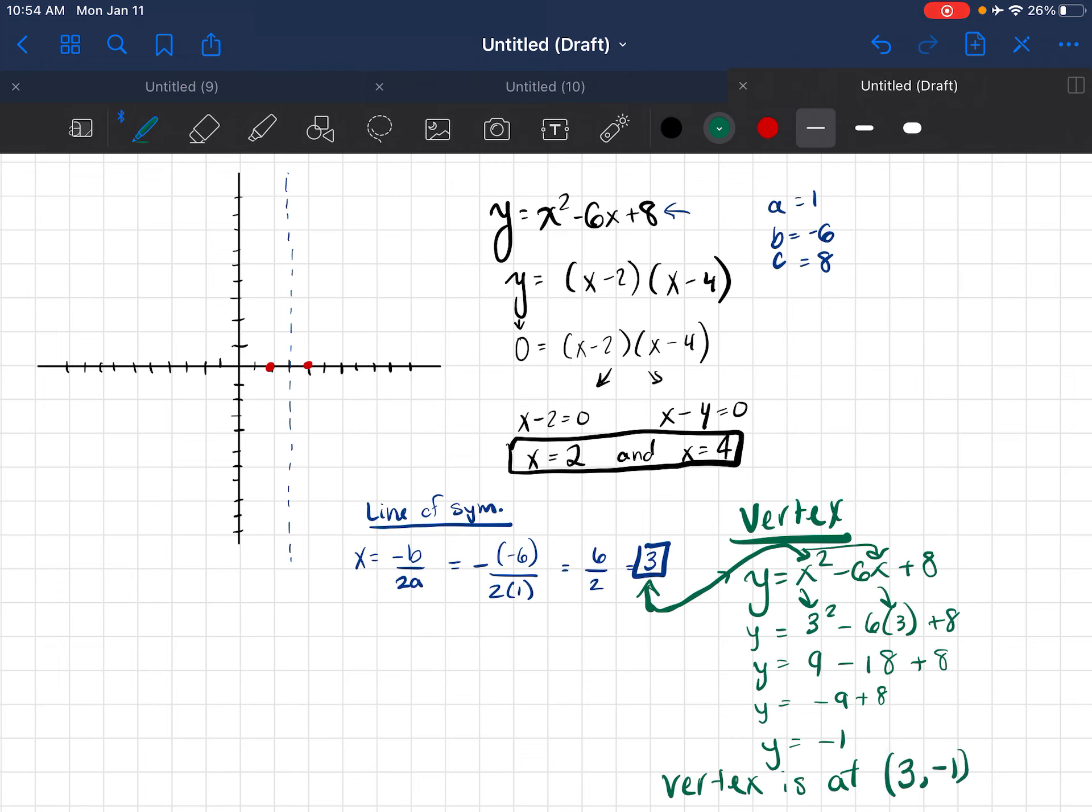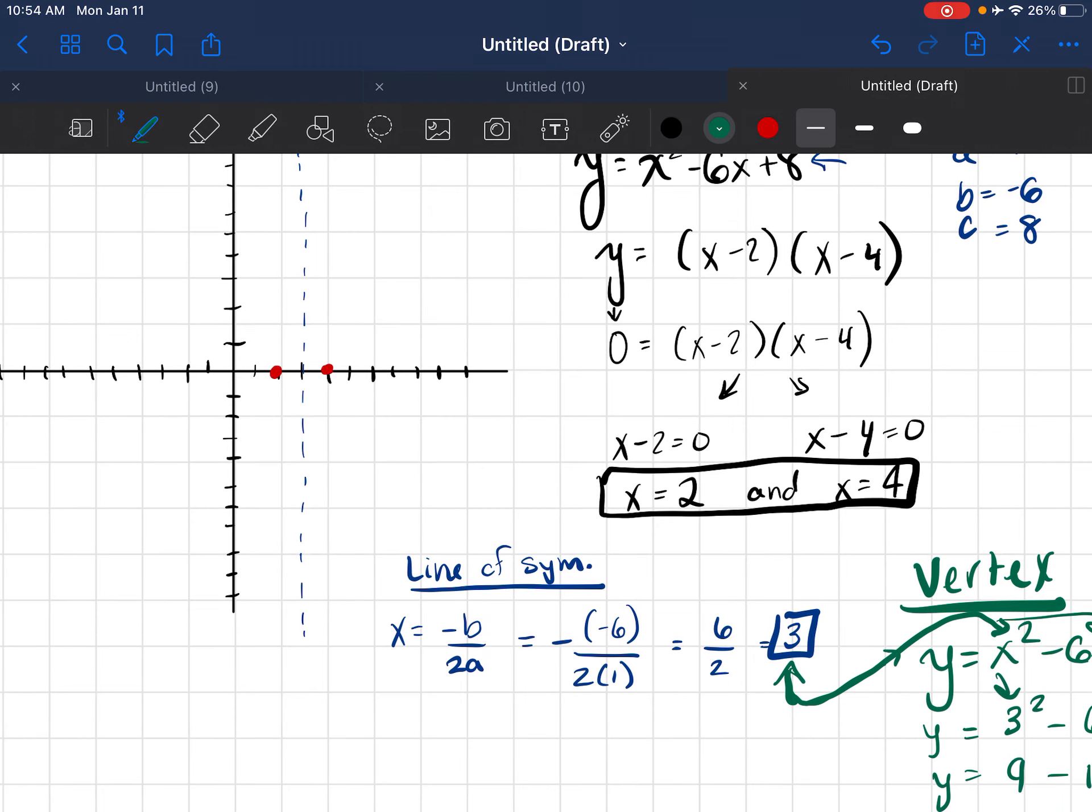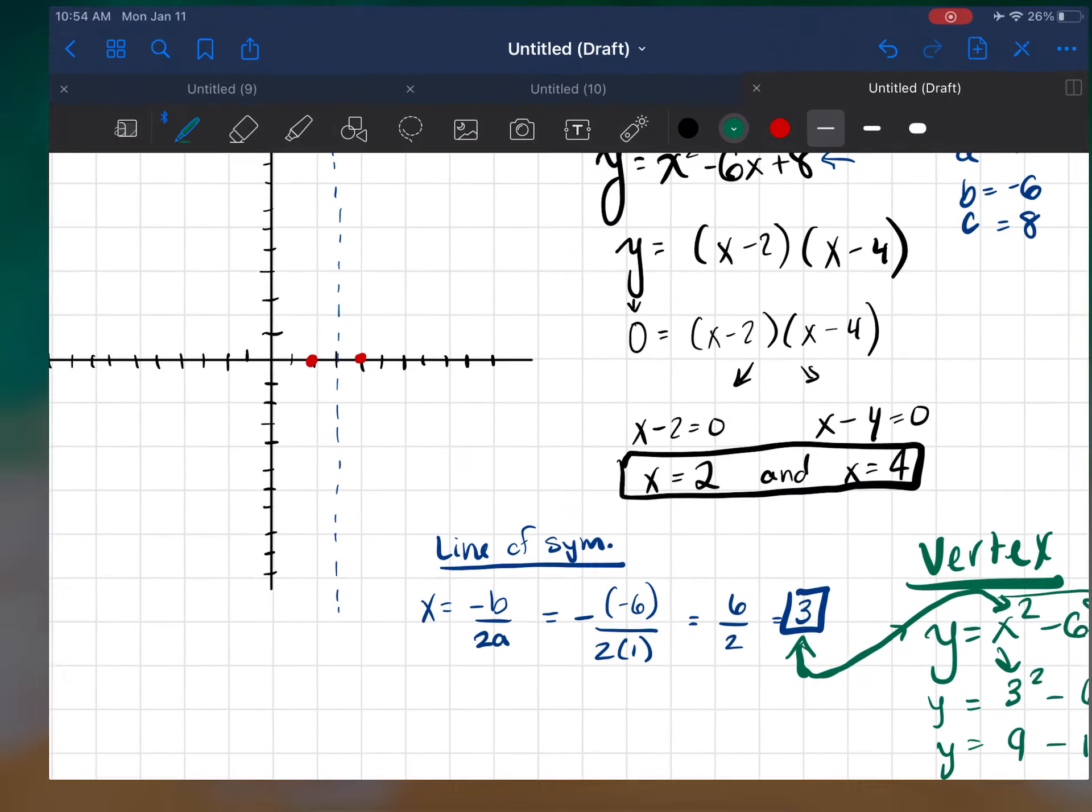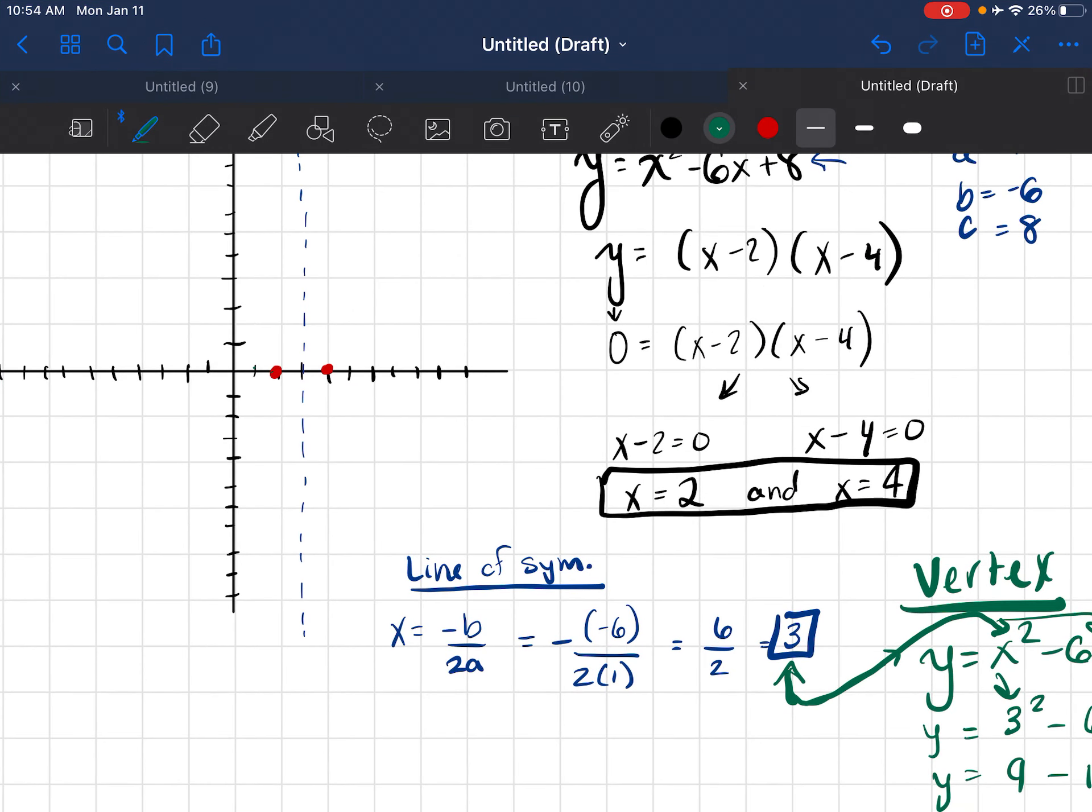So the vertex is at 3, negative 1, because I know the vertex is an x, y coordinate point. So I'm going to come up here and graph 3, negative 1. So I have 1, 2, 3, negative 1. That's my vertex.